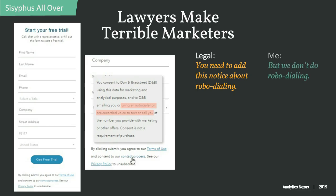Another example: robo-dialing. You've probably been the victim of it — it's not pleasant. Your cell phone rings from an unknown number, you pick it up, the machine starts talking to you, asking you to press one to connect with some shady salesperson. Our legal team came to us and insisted that we include robo-dial disclaimers on our form legalese. Of course, it didn't seem to matter that we don't actually engage in the practice, but the potential seemed risky enough. Lawyers are terrible marketers.